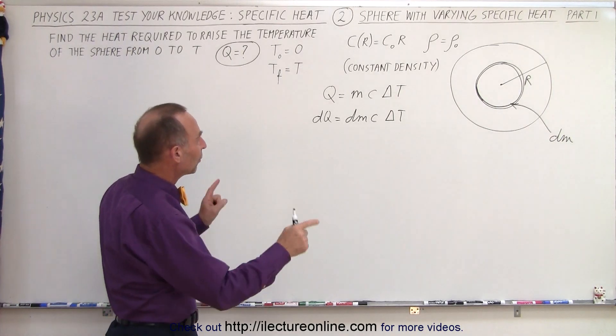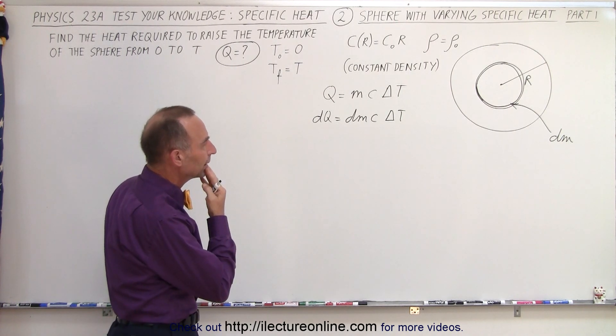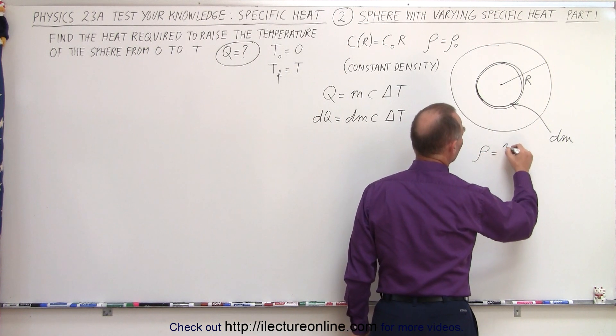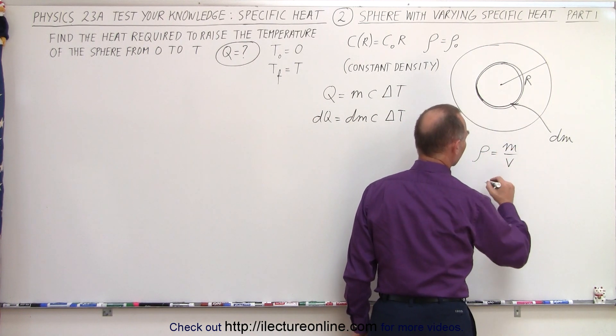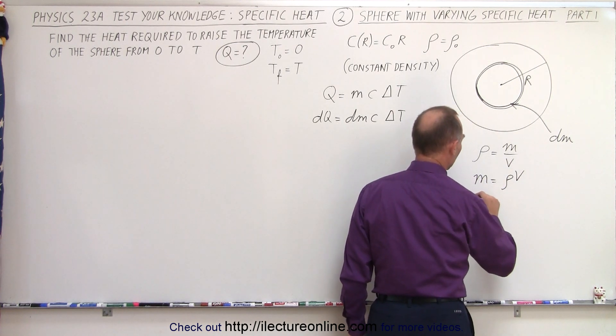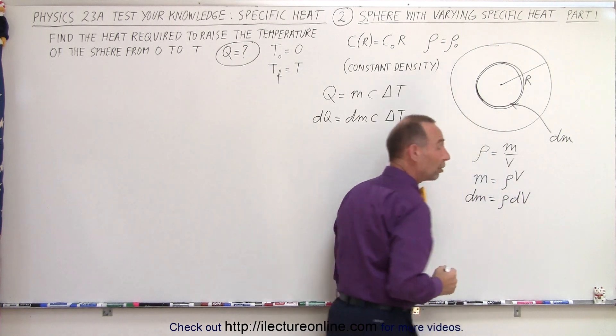So, how do we now relate dm to the specific heat? Well, we know that the density of an object is equal to the ratio of the mass divided by the volume, which means that the mass is equal to the density times the volume, so dm is equal to the density times a small volume element.